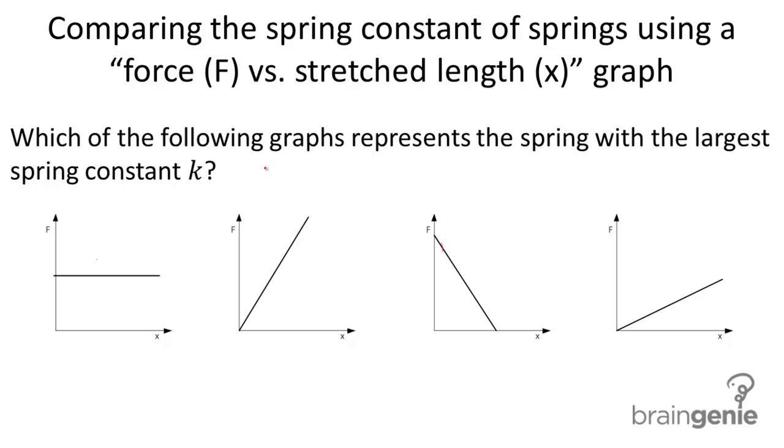So if we look at these graphs, these graphs are F versus x. Now, if we look at Hooke's law, Hooke's law is f equals negative k x.